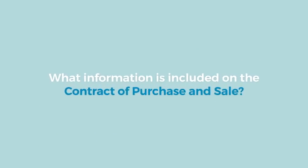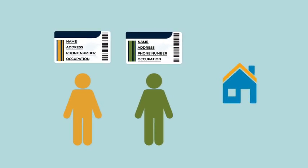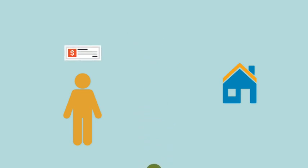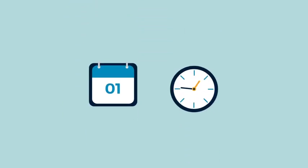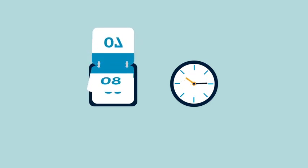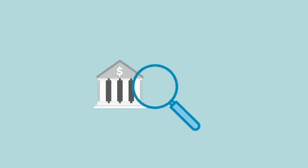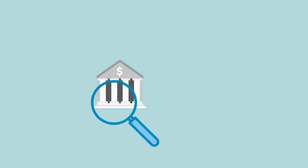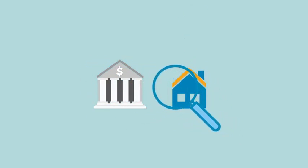What information is included on the Contract of Purchase and Sale? It will include basic information about the buyer, the seller, and the property, as well as the purchase price being offered by the buyer, whether there is a deposit being paid, how much that deposit is, and who will hold it. It also includes the date and time that the offer expires — this period may be days or hours, determined by the buyer with market conditions in mind. Buyers sometimes request that their offer is contingent on certain terms and conditions, such as obtaining satisfactory financing and/or completing and approving a home inspection.